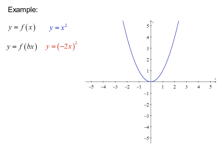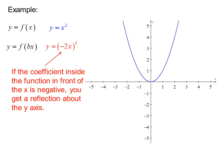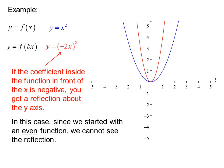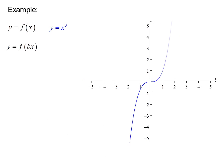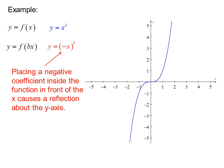If I look at the graph of Y equals negative 2X in parentheses squared, the coefficient inside the function in front of the X is negative, and we get a reflection about the Y-axis. In this case, since we started with an even function, we cannot see the reflection. So let's look at an odd function — a negative coefficient inside the function in front of the X causes a reflection about the Y-axis, and this time we can see it.